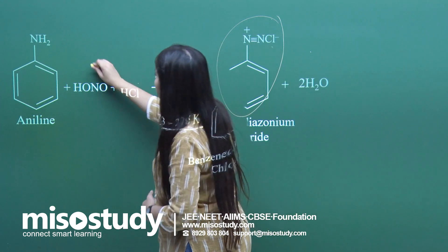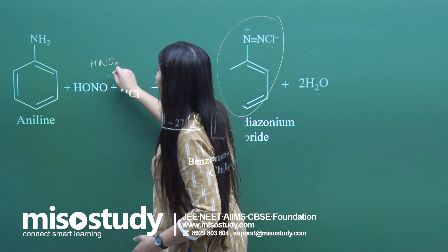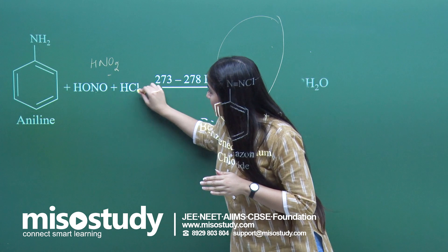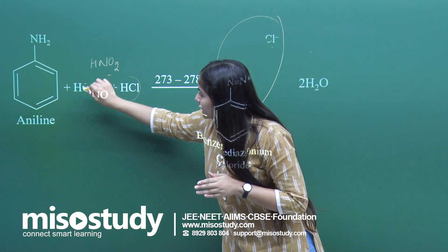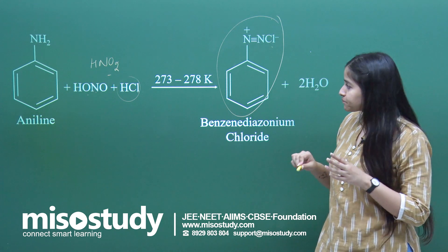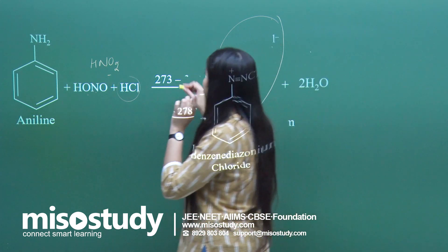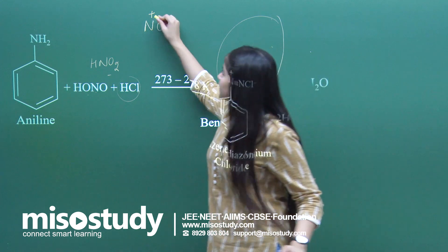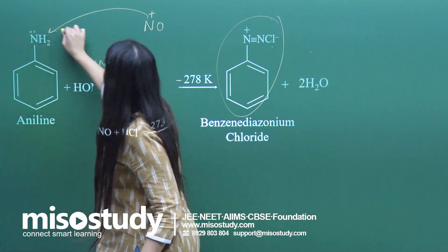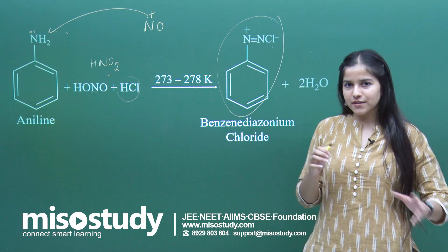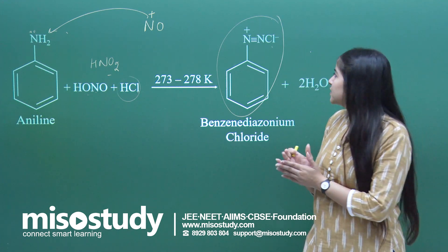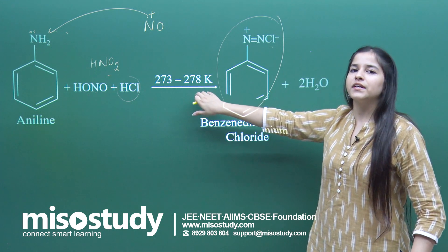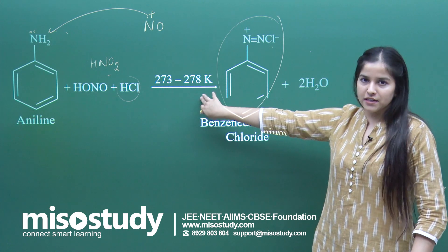Basically, I have taken HNO2 written in HONO form. This HNO2 in the presence of HCl — by the attack of H⁺ ion on this nitrous acid, we get the production of an intermediate called the nitrosonium ion. This nitrosonium ion then attacks the lone pair available on the nitrogen. Please note that this reaction happens at a very low temperature of 0 to 5 degree Celsius.